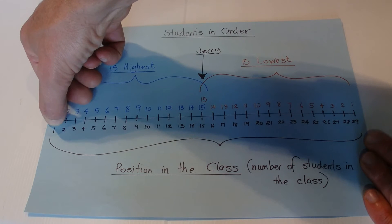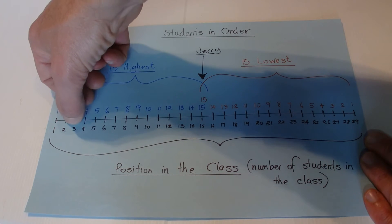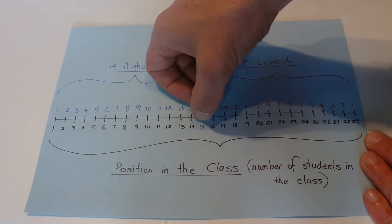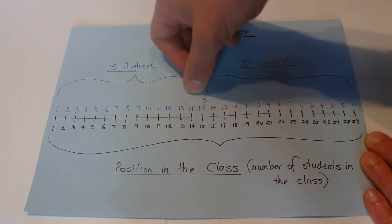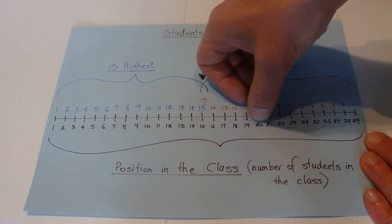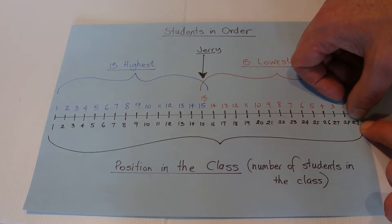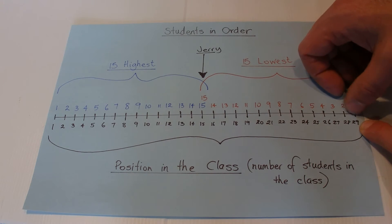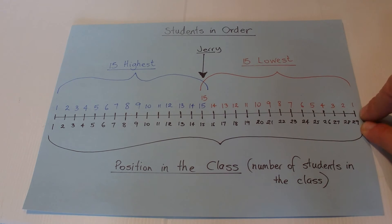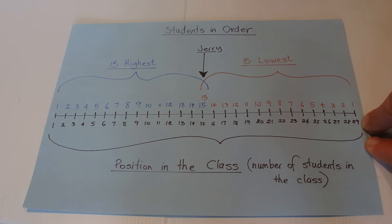We've got the highest mark, the first student, then the second highest, third highest, fourth highest, fifth highest, right through to the 15th which is Jerry, and then we go right through to the end to the 29th position, which ends up being the lowest mark in the class. That's actually the answer - there's 29 students in the class.